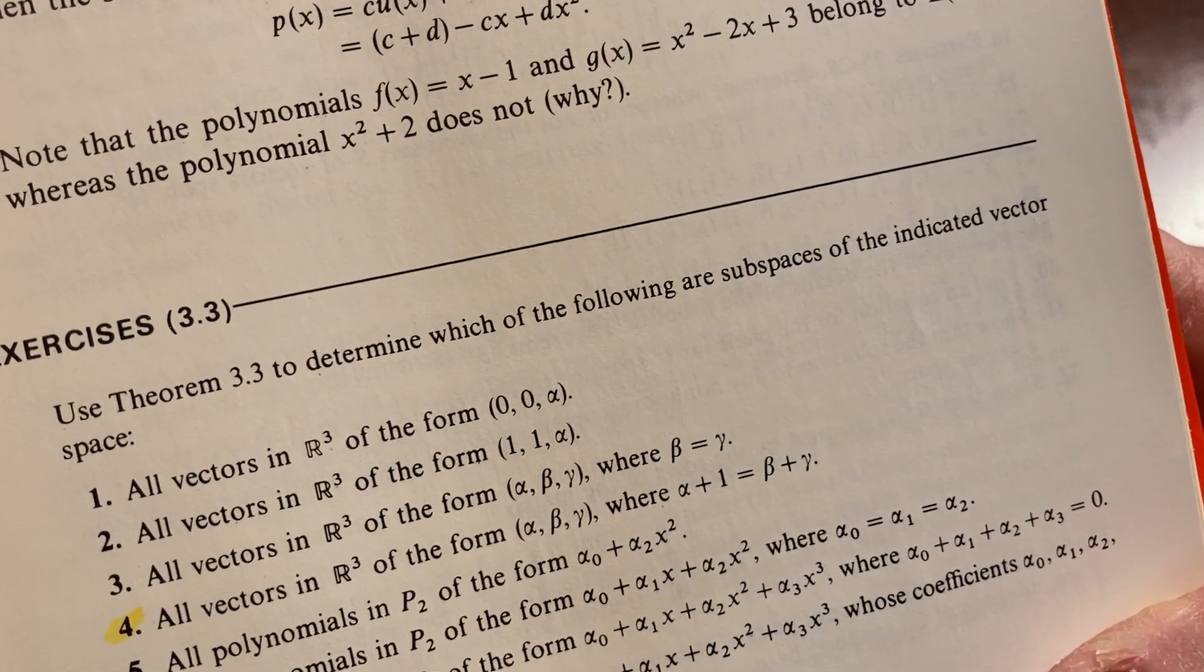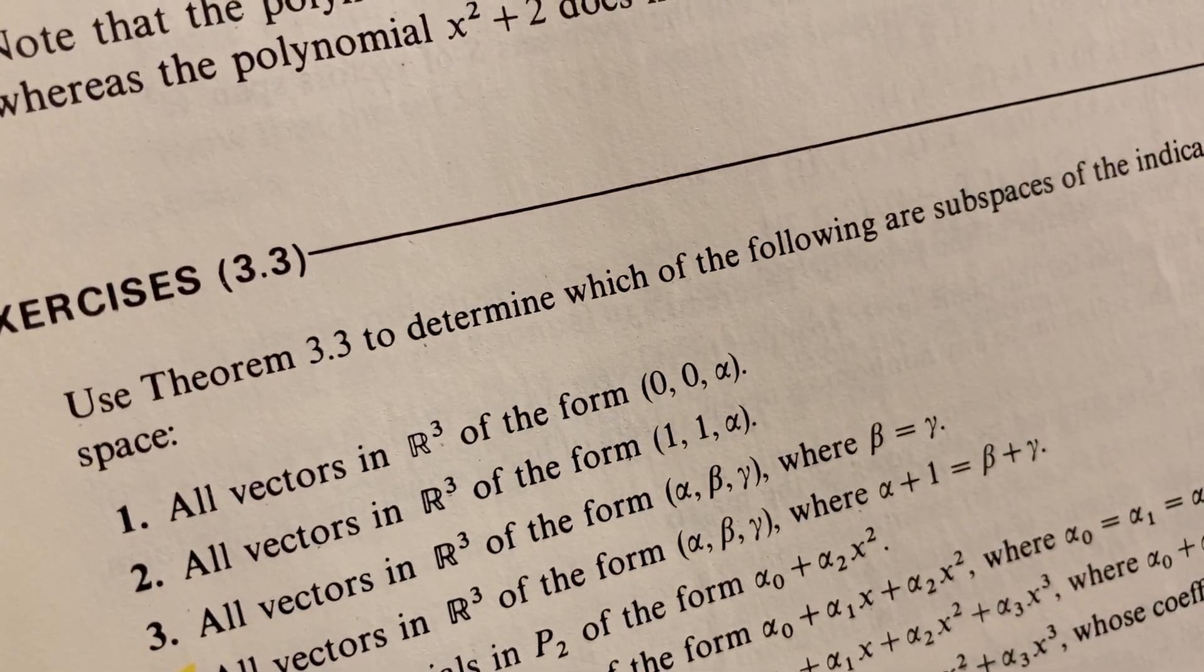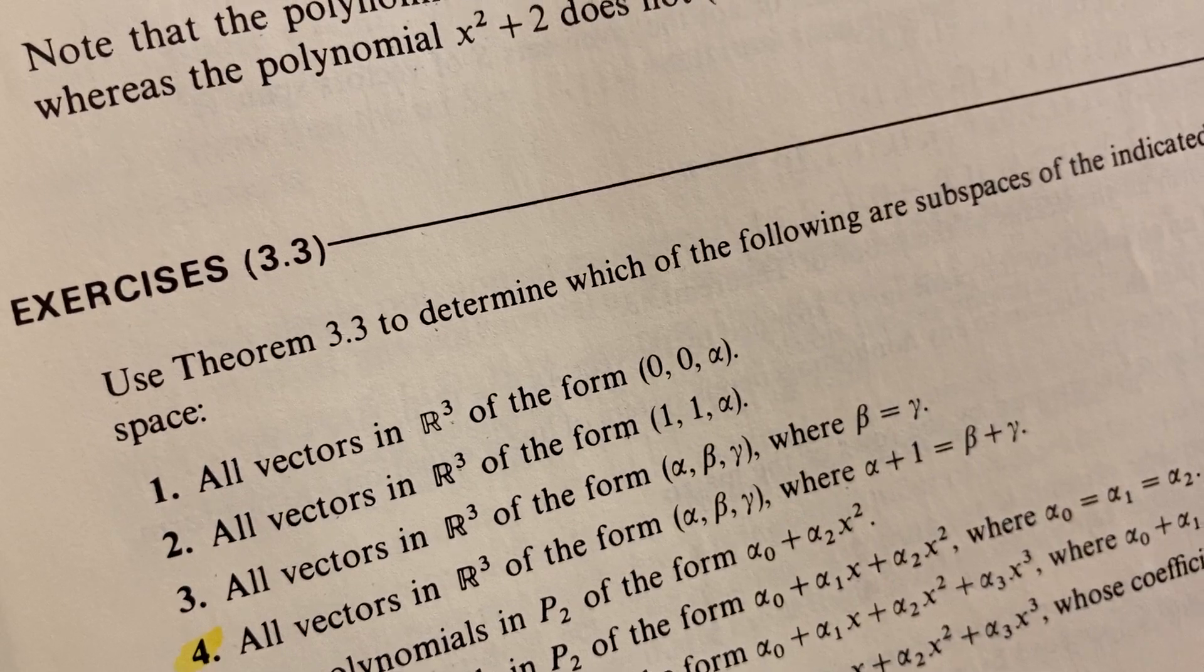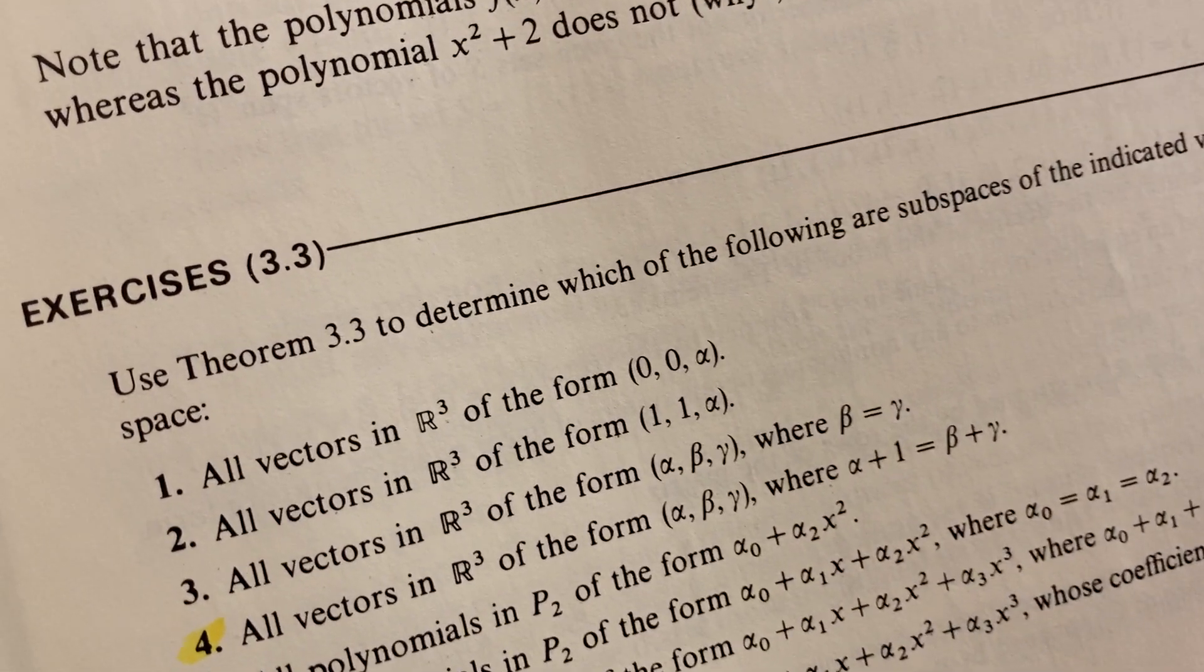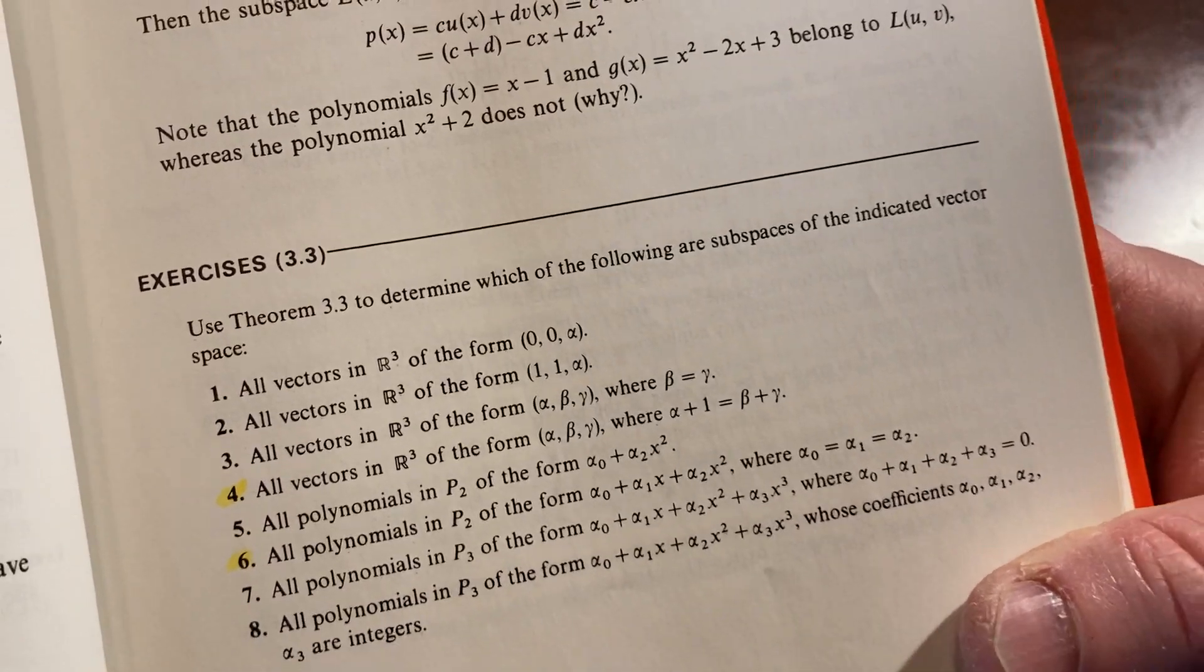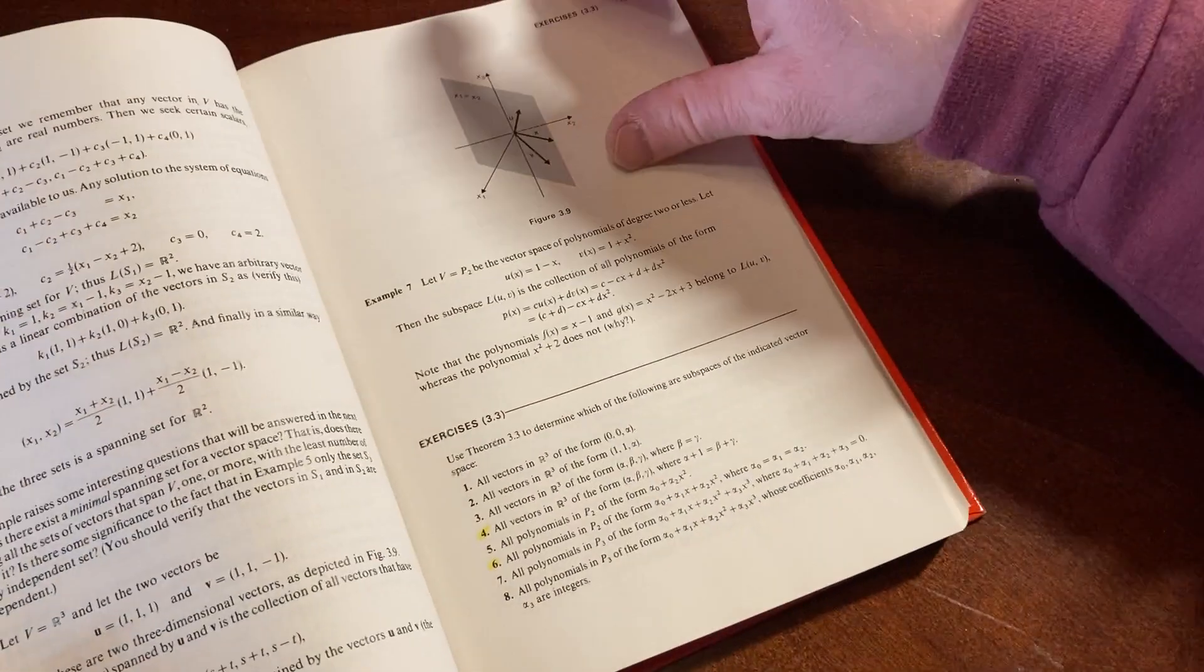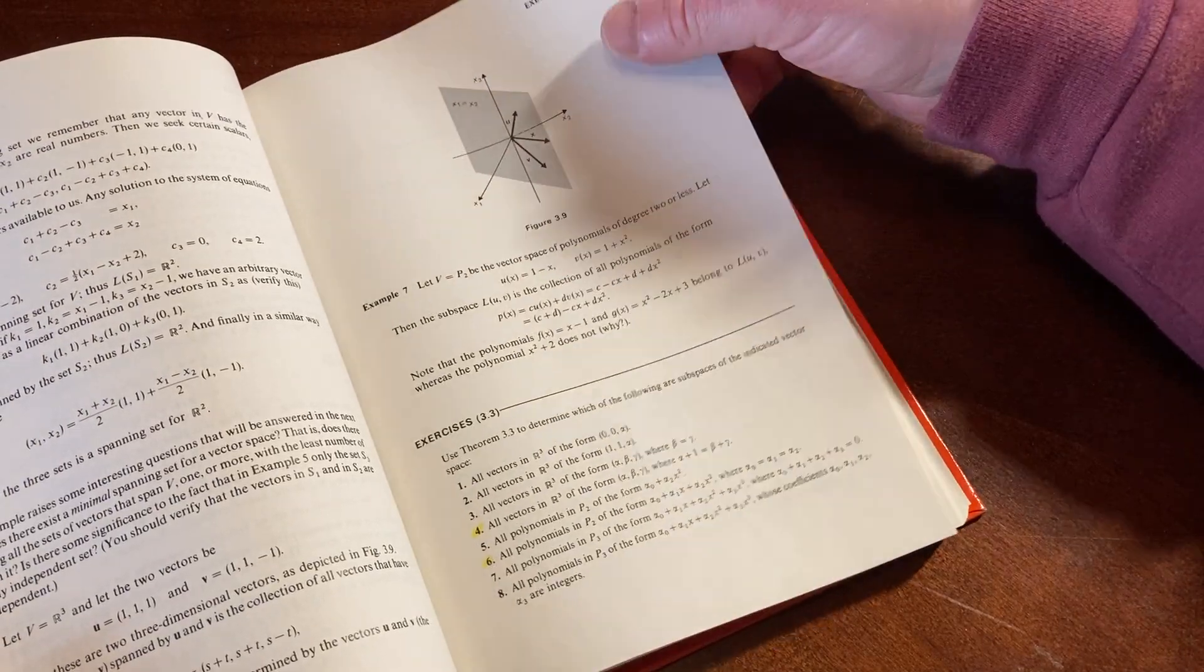Indicated vector space. All vectors in R3 of the form 00 up up. Cool. Let's see if that's a subspace of R3. Is it? You have to go through and check all of these. Some of them will be, some of them won't be. And it's nice you have answers.